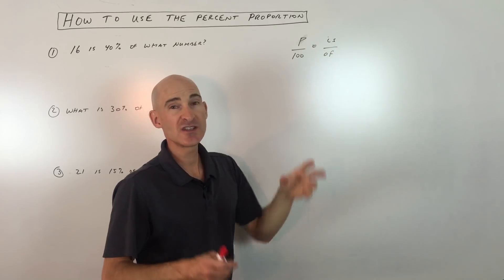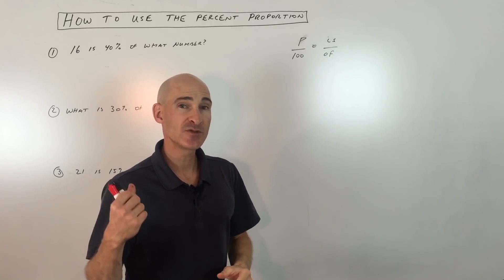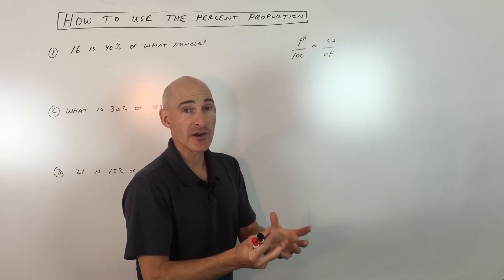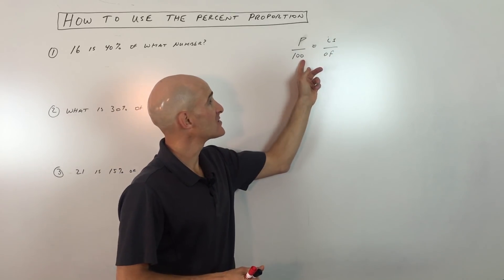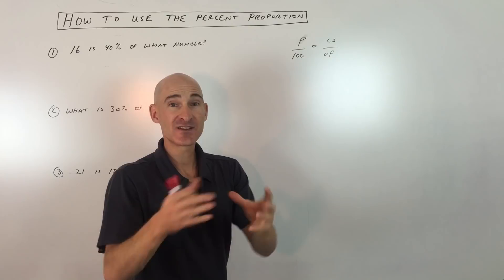Equals is over of. So you're going to see the words is and of in these problems. Is is the part, and of is out of, meaning out of the total. Just like 100% is the total, out of, that's the total.